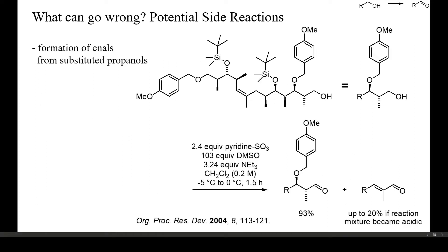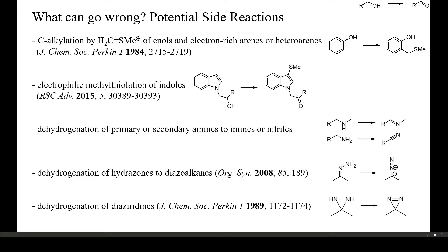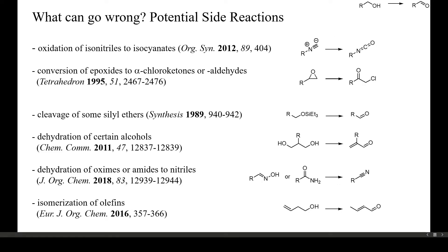Aldehydes with good leaving groups in beta position readily undergo amine or acid catalyzed beta elimination. In this example, the authors observed variable amounts of an alpha-beta unsaturated aldehyde as byproduct, counterintuitively when too little base was used. There are further potential side reactions of DMSO-mediated alcohol oxidations, including electrophilic methyl-thiomethylations, electrophilic thiolations and the dehydrogenation of various nitrogen-containing functional groups. Highly reactive functional groups such as isonitriles or epoxides also readily react with the intermediates of Swern and related oxidations. Dehydration of alcohols, oximes or amides may also occur.